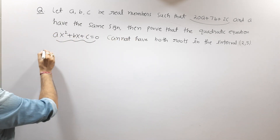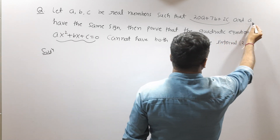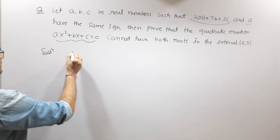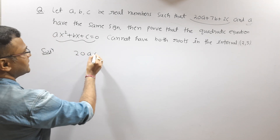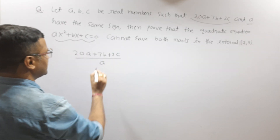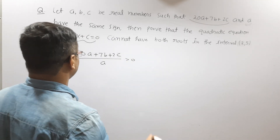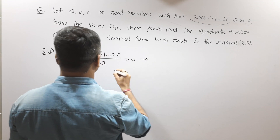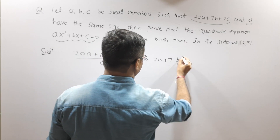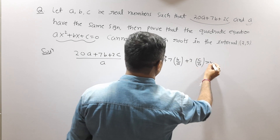So, we are given that 20a + 7b + 2c and a have the same sign. If these two terms have the same sign, then we can write their ratio: (20a + 7b + 2c) divided by a is positive. This implies 20 + 7·(b/a) + 2·(c/a) > 0.